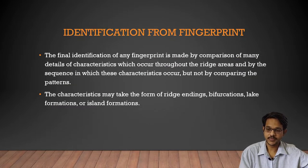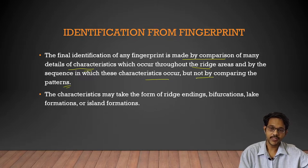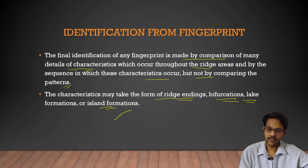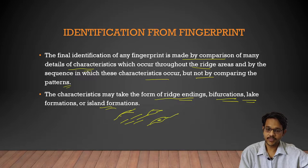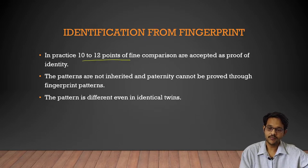The final identification of any fingerprint is made by comparing many details of characteristics which occur throughout the ridge areas and by the sequence in which these characteristics occur — not by comparing the overall patterns. Characteristics may take the form of ridge endings, bifurcations, lake formations, or eye-line formations. In practice, 10 to 12 points of fine comparison are accepted as proof of identity.